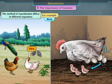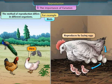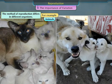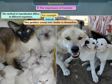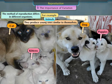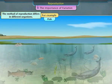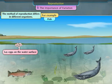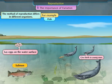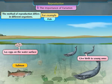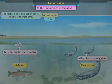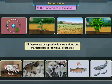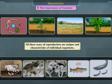When we observe birds, the hen, for example, reproduces by laying eggs. In the case of animals, they produce young ones similar to themselves — cats produce kittens while dogs give birth to puppies. Fishes either lay eggs on the water surface, as observed in the case of salmon, or they give birth to young ones, as observed in the case of blue whales. All these ways of reproduction are unique and characteristic of individual organisms.